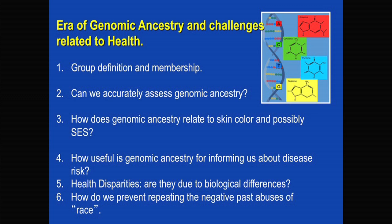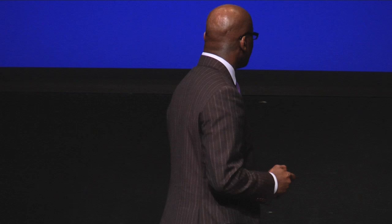The technology allows us to assess genetic ancestry at the individual level, while at the social-cultural level you may think you're one thing but genetically you may be something else. This creates an interesting tension as people reconcile genetic and environmental data. Can we accurately assess genomic ancestry? How does ancestry relate to skin color and SES? How useful is it for informing us about disease risk? We know certain diseases are more prevalent in particular ethnic groups. Will ancestry help us understand those differences? And most importantly, what about health disparities — are they due to biological differences or social-cultural and behavioral factors?